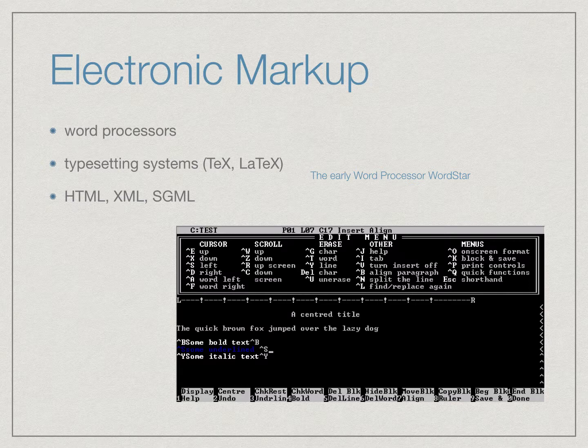Digital markup has a long history. Electronic markup is used in word processors, as we see in this screenshot of the early word processor WordStar, which used electronic markup to indicate different formatting options such as bold, underline, and italics.